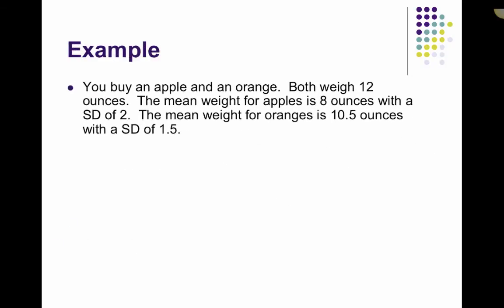For example, we are going to compare apples and oranges. You go out, you buy an apple and an orange, and both weigh 12 ounces. The mean weight for apples is 8 ounces with a standard deviation of 2, and the mean weight for oranges is 10.5 ounces with a standard deviation of 1.5. So we want to know which one is bigger. So despite the fact that they both weigh the same amount, because apples and oranges tend to be different in size, we could consider one of them to be bigger than the other when we are comparing them.